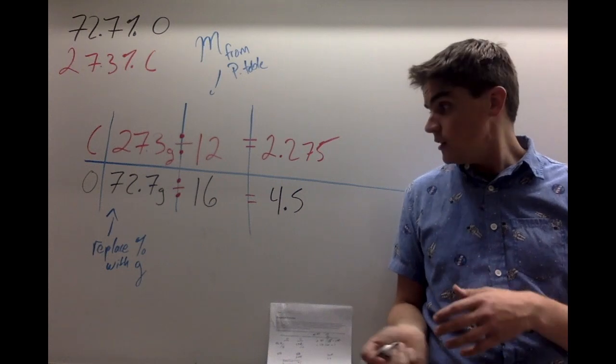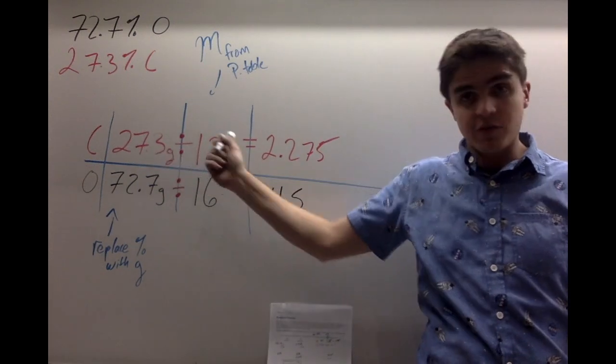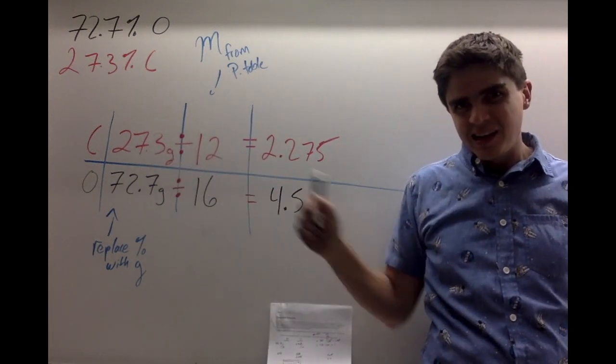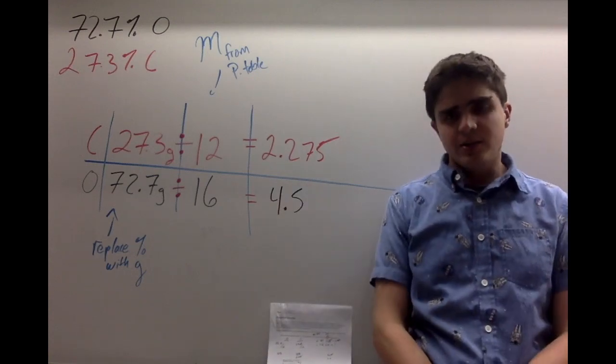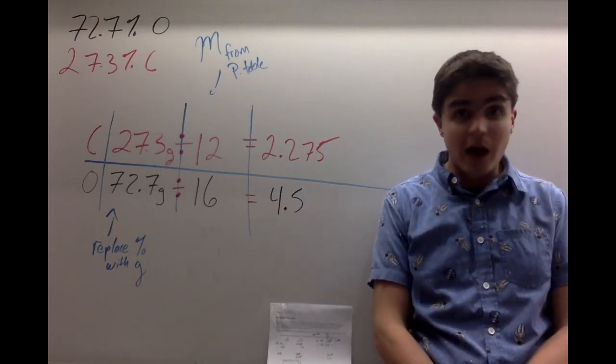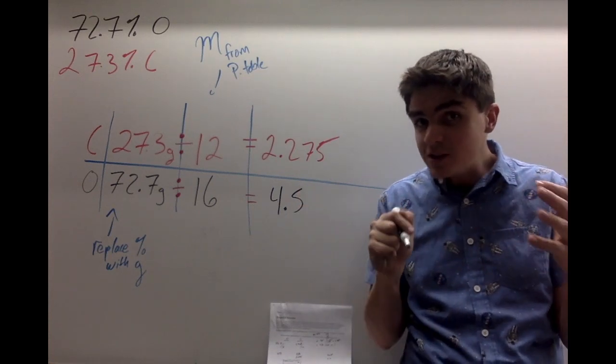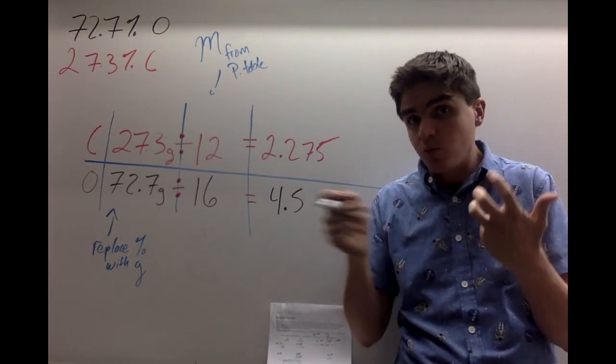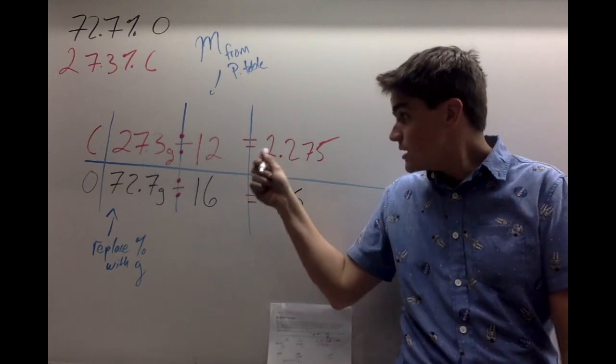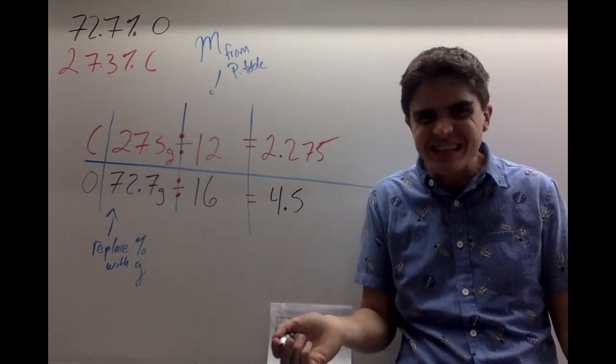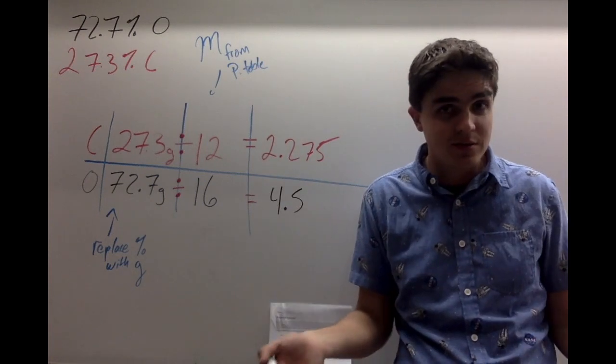Now I get a quotient, right? Again, this is just 27.3 divided by 12. Now these aren't whole numbers. It would be nice if they were, but they're not, and so I need to make them a ratio where one relates to the other. And the easiest way to make that is the smallest number needs to be equal to 1. So I need to make 2.275 turn to 1. Well, that's easy to do. I just need to divide it by itself.